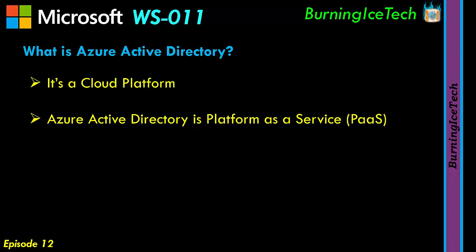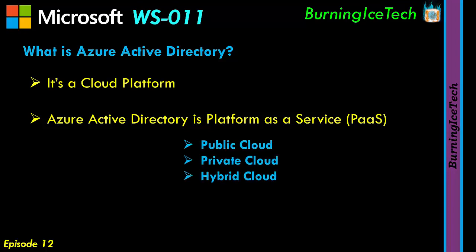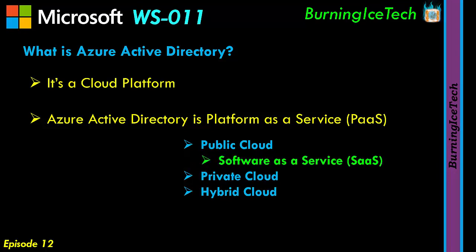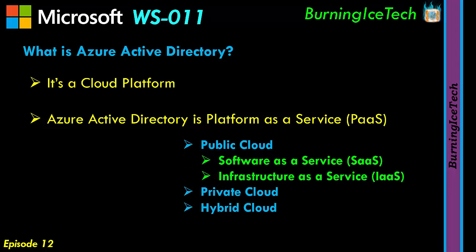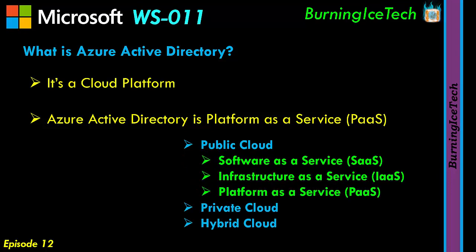In case you don't know what that is, it's basically a specific type of cloud. You generally get about three main types of public cloud — and yes, you also get public cloud, private cloud, and hybrid cloud, but we won't discuss those today. With regards to public cloud, there are three main types: Software as a Service, Infrastructure as a Service, and Platform as a Service, which is what Azure Active Directory is.